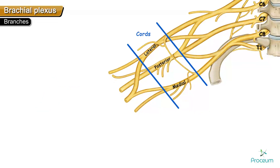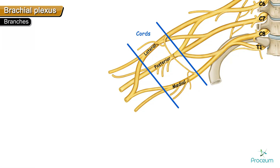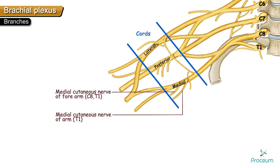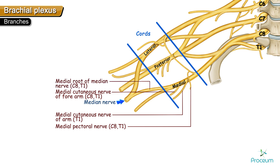The branches from the medial cord of the brachial plexus are the medial cutaneous nerve of the arm, medial cutaneous nerve of the forearm, medial pectoral nerve, medial root of the median nerve, and ulnar nerve. You can remember these with the mnemonic 'M for U': Medial cutaneous nerve of arm, Medial cutaneous nerve of forearm, Medial pectoral nerve, Medial root of median nerve, and Ulnar nerve.